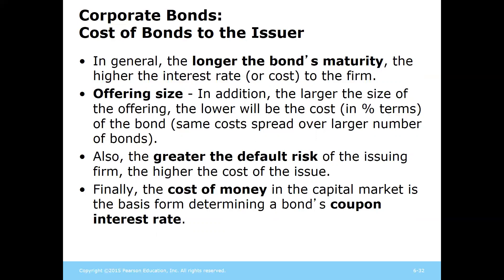If you remember, our rate equals the risk-free rate plus the inflation premium plus the risk premium. Our overall bond rate equals that risk-free rate plus the inflation premium plus the risk premium — which is what we discussed in the last class session.